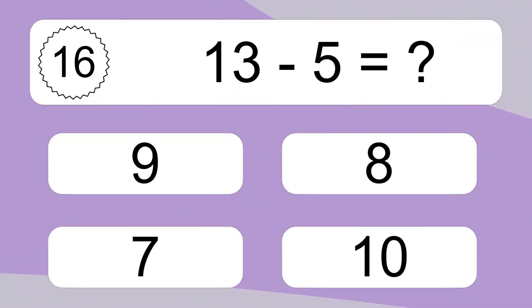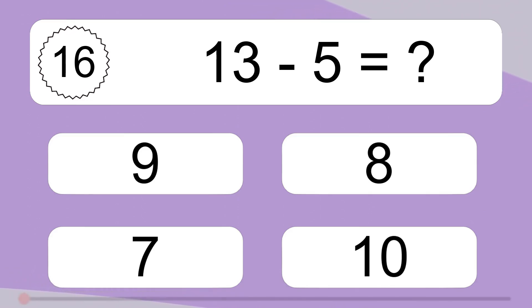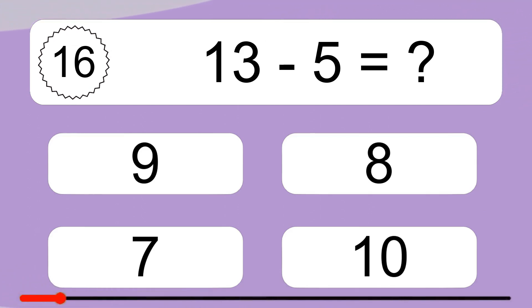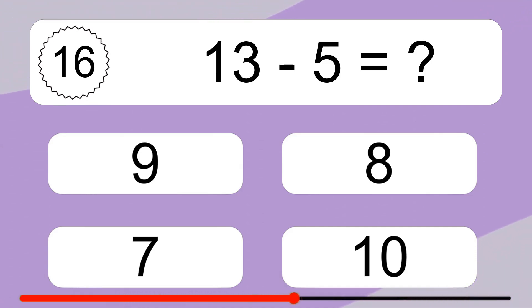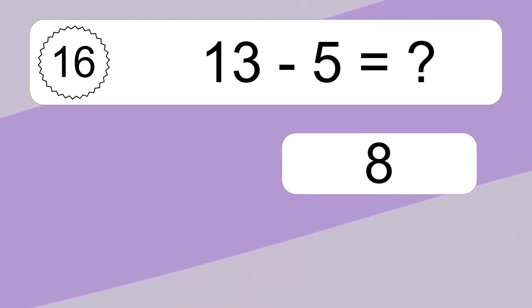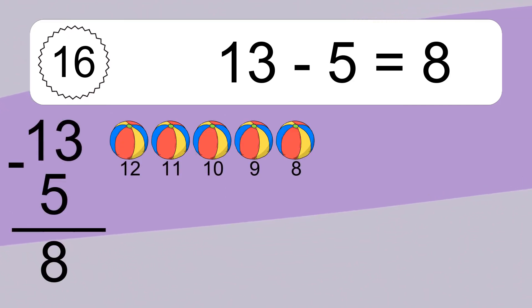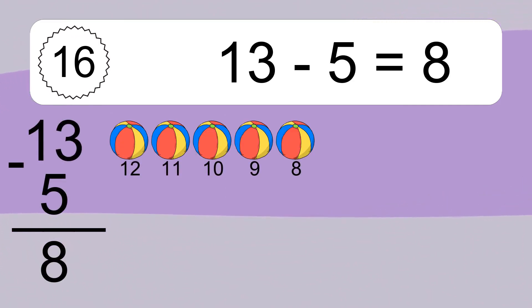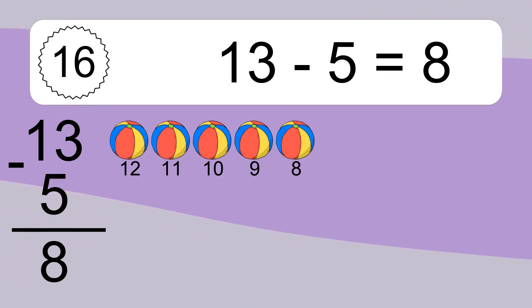13 minus 5 equals what? 13 minus 5 equals 8. Let's count it: 12, 11, 10, 9, 8.